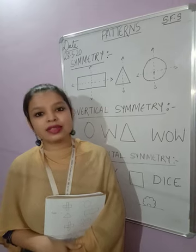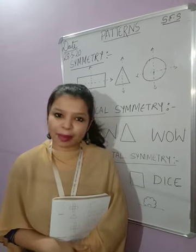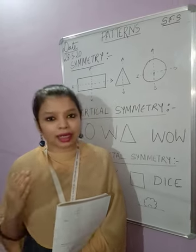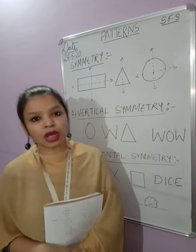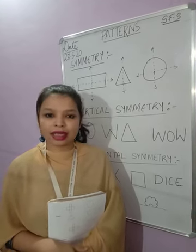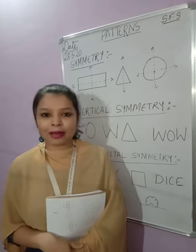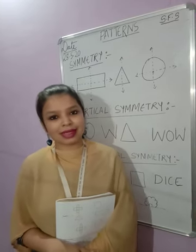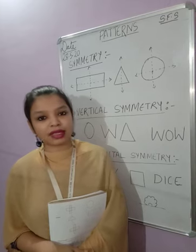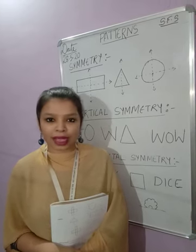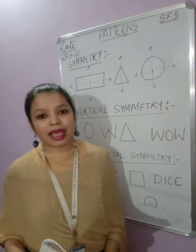In the previous class, we learned about patterns. So what is a pattern? An arrangement of images, shapes, objects or designs is known as a pattern. Patterns can be of two types: natural and man-made or artificial patterns. We also drew some patterns in lines and shapes.